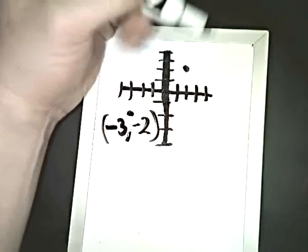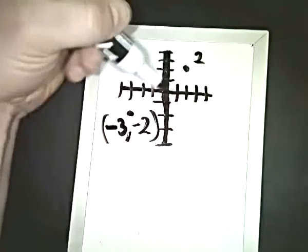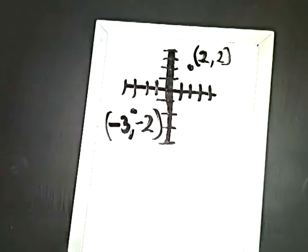I'll do the same thing for the one at the top. I'll go over two here. So positive two. And for y, one, two. So negative three, negative two, and two, two.